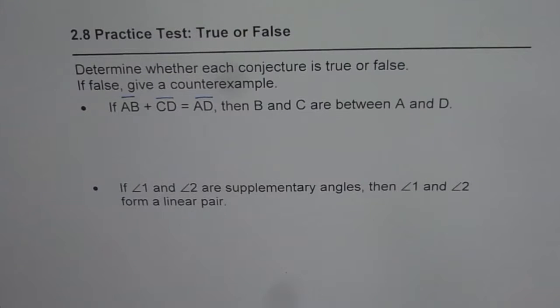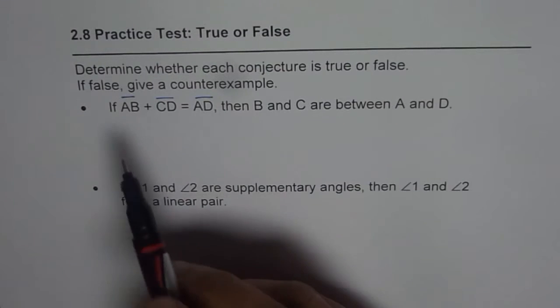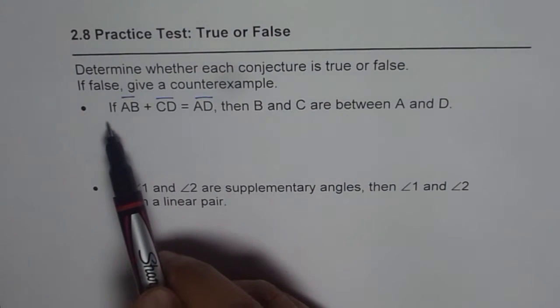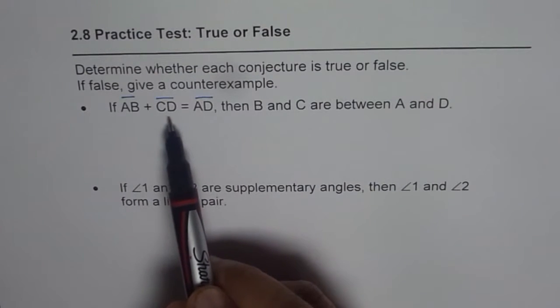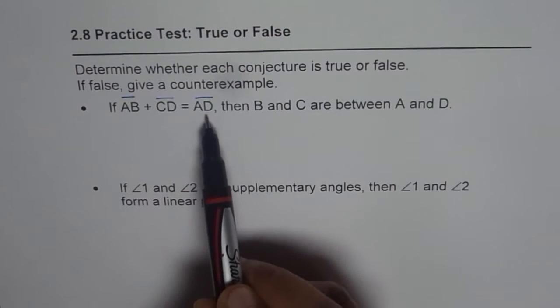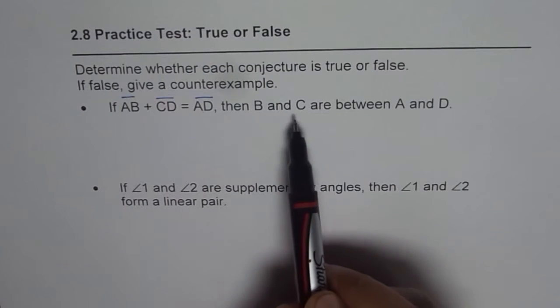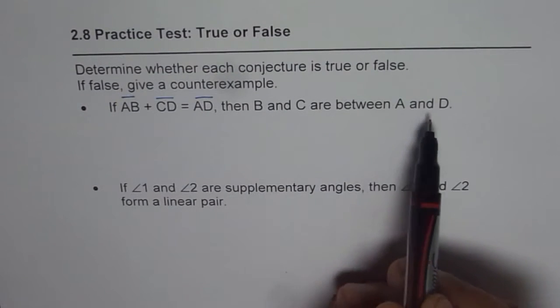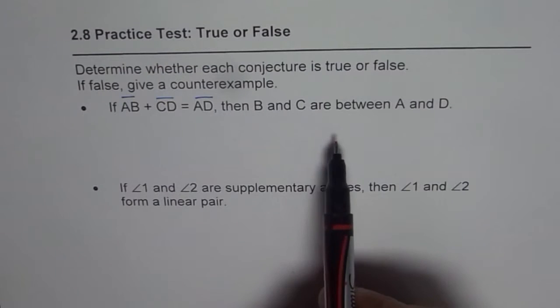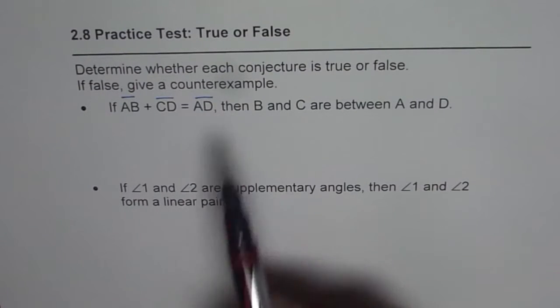Now it should be a practice to provide counterexample even if not asked for. The question here is, if segment AB plus segment CD is equal to segment AD, then B and C are between A and D. Is it true or false? If it is false, provide a counterexample.